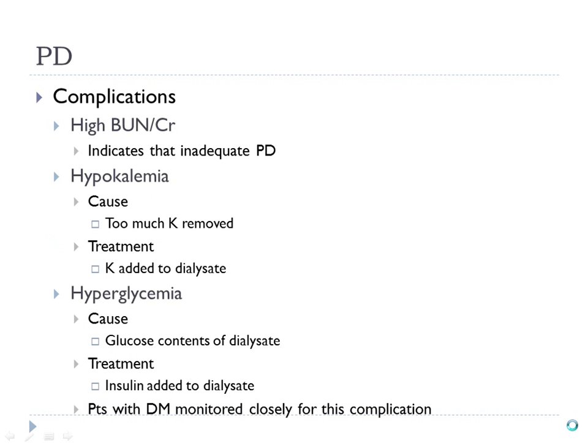If the patient's BUN and creatinine are not coming down after peritoneal dialysis, the peritoneal dialysis is not effective. Also, too much potassium might have been removed. Hemodialysis can much better regulate what's happening. With peritoneal dialysis, you're letting osmosis and diffusion happen — they've adjusted the contents of the dialysate to try to regulate electrolytes.